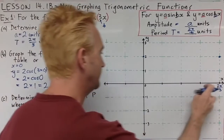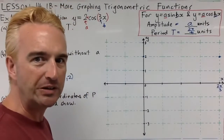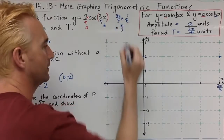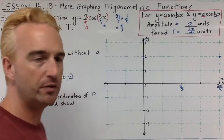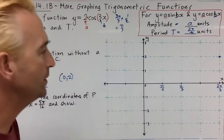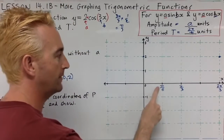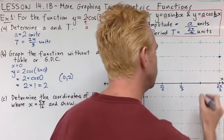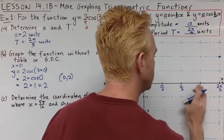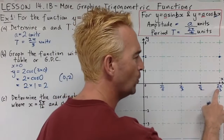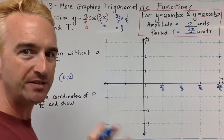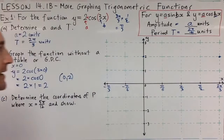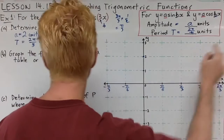Now let's fill in the rest of the x-axis values using fractions. Half of 2π/3 is π/3, and half of π/3 is π/6. So we go up in multiples of π/6: π/6, 2π/6 simplifies to π/3, 3π/6 simplifies to π/2, and 4π/6 simplifies to 2π/3. On the negative side these just mirror over, giving us negative π/6 and negative π/3.